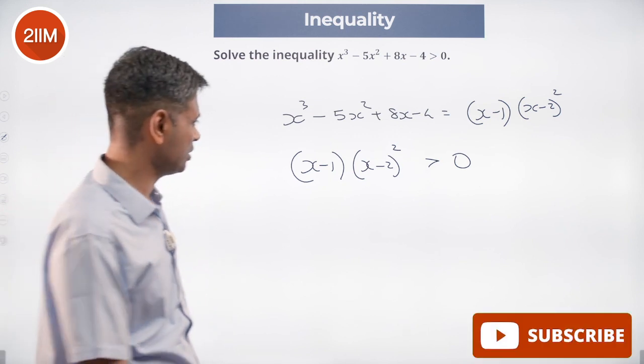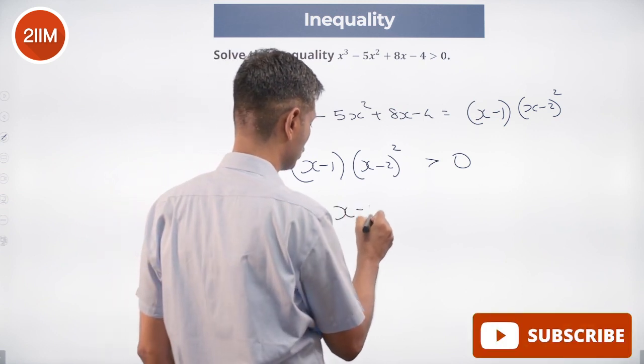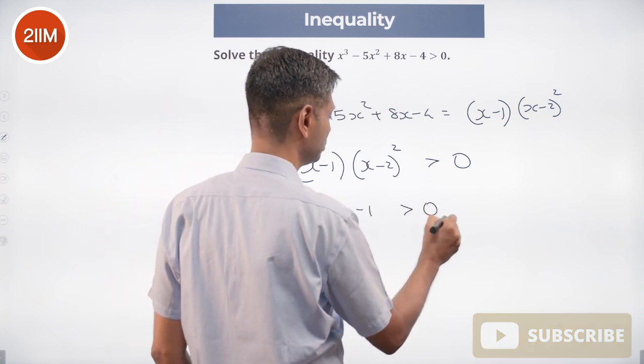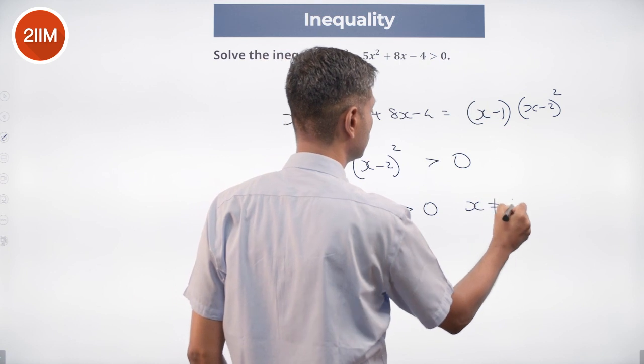It should not be 2. This question now becomes x - 1 > 0, keeping in mind that x ≠ 2.